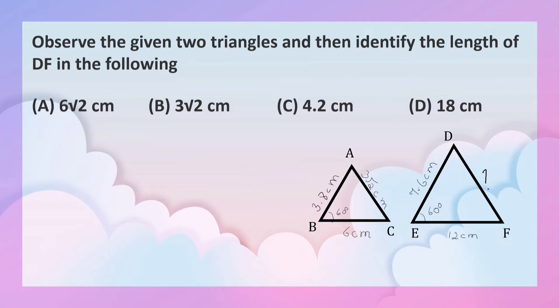If you observe carefully, you can identify the relationship between the sides and angle. 3.8 into 2 is 7.6. 6 into 2 is 12. Angle B is equal to angle E, that is 60 degrees.